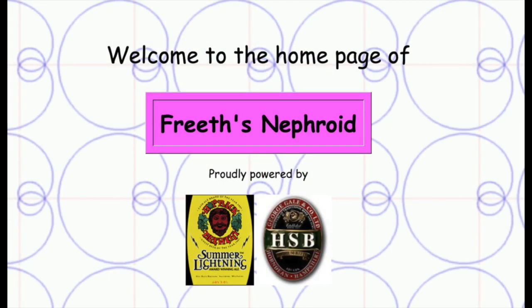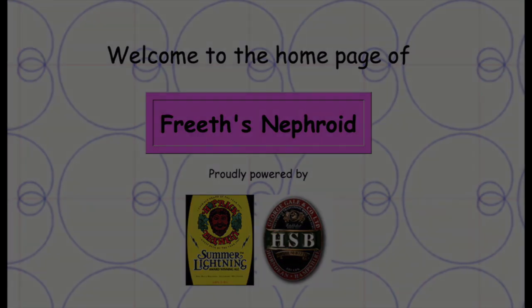Incidentally, Freeth's nephroid is also the name of a group of mathematicians, mostly from Royal Holloway College London, who gather weekly in a pub called The Beehive and compete in games of Trivial Pursuit.